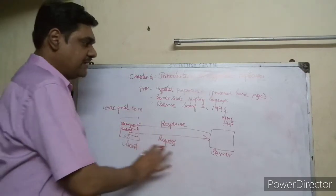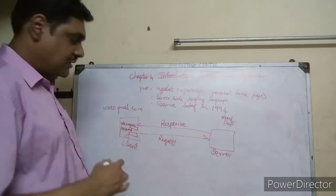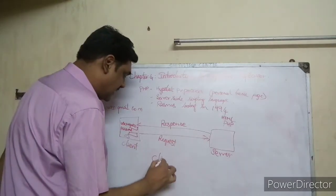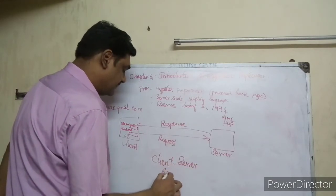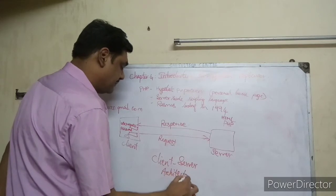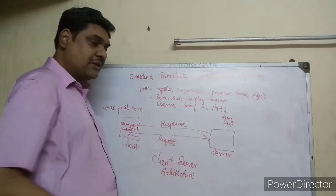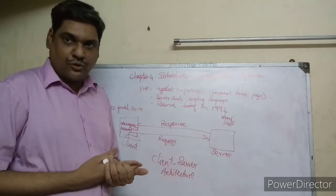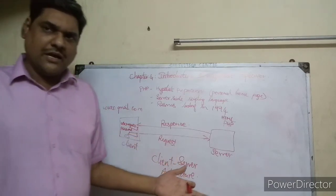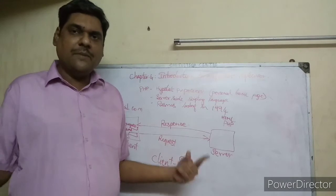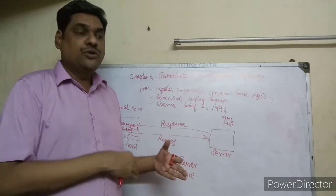This is the architecture of client-server architecture. Suppose this is the client computer. This is the server. The server has a database - we maintain a huge collection of data. For example, the Gmail server has millions and billions of users and passwords stored in the database.